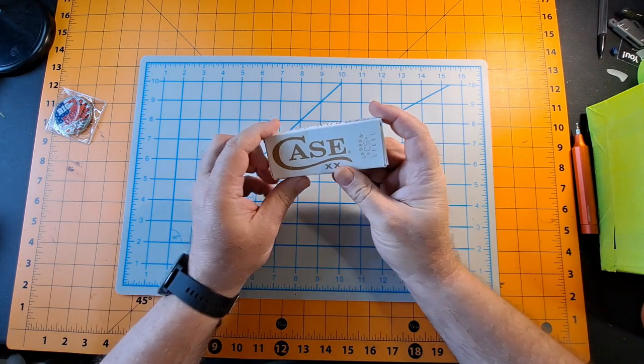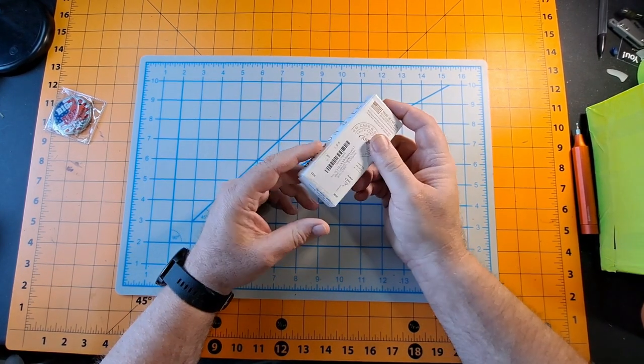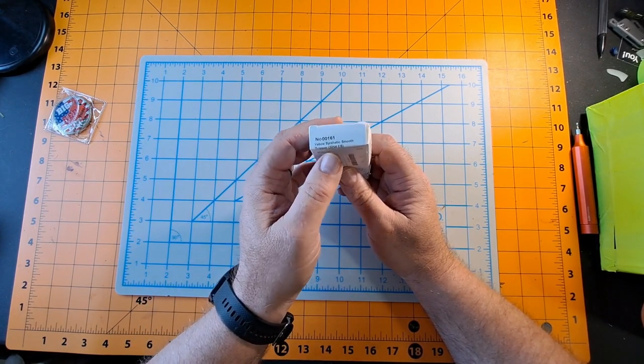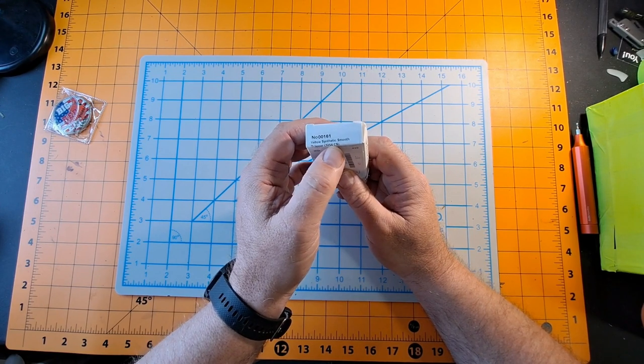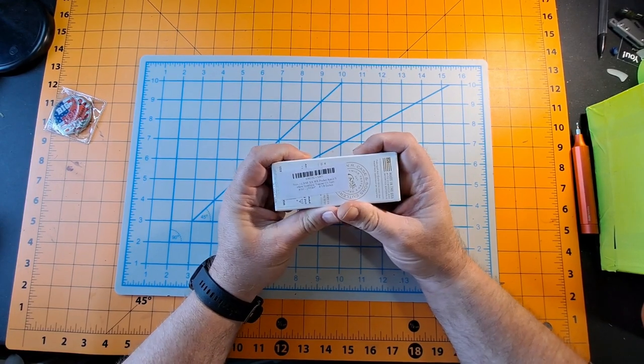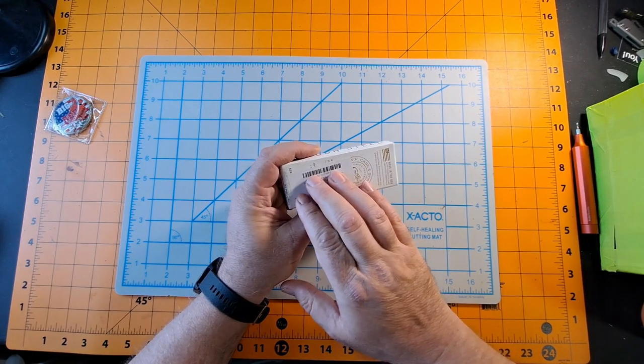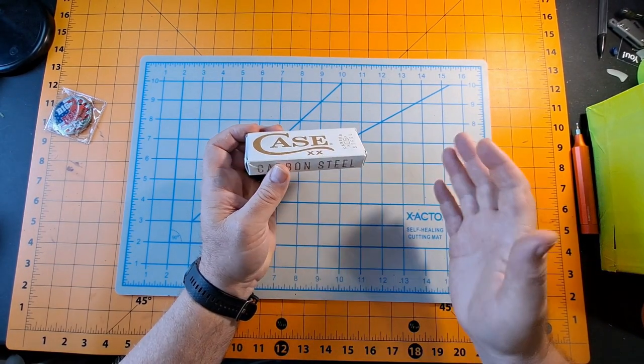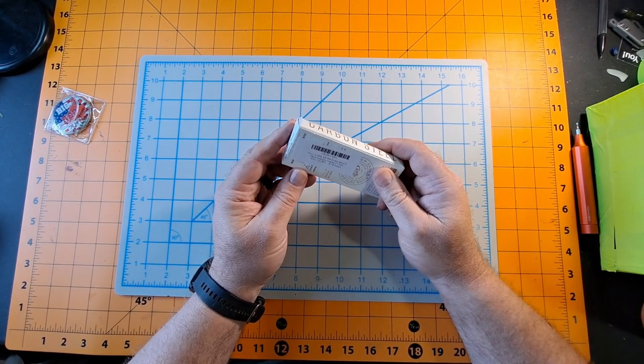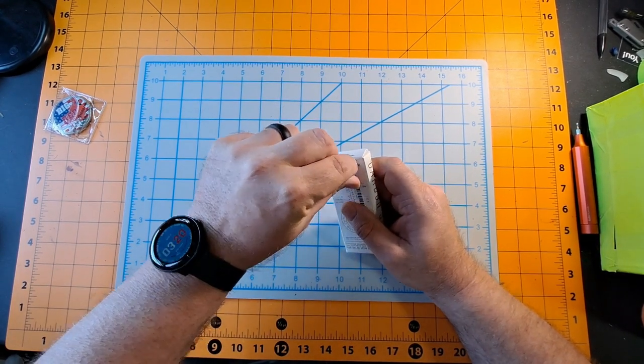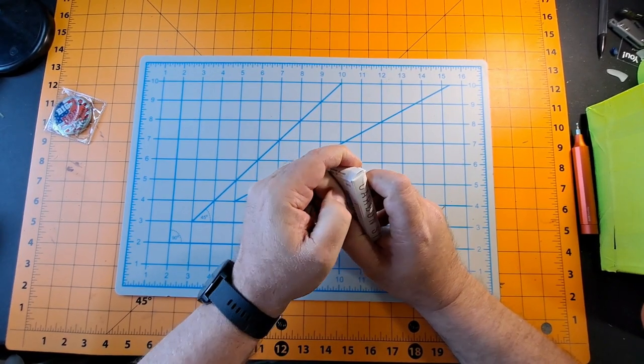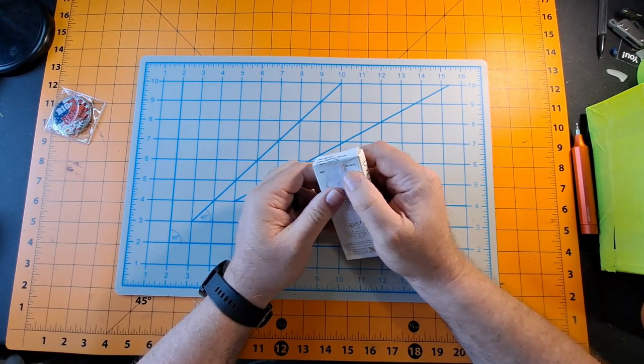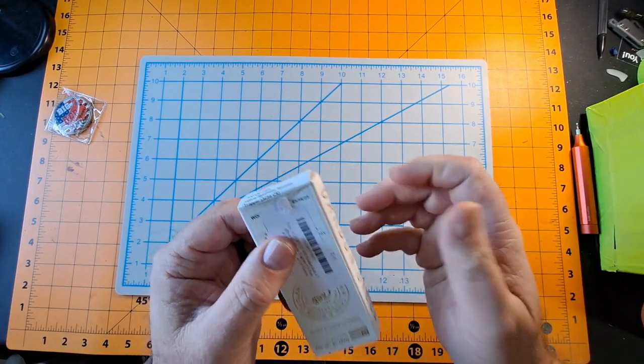This is a Case carbon steel, model 00616 I guess, yellow synthetic smooth trapper. Actually, the model is 3254CS for carbon steel. I actually wanted the chrome vanadium, the CV, not the carbon steel, which I guess is basically the same thing. So they covered up the date that it was made. It was made 01-1823, right there. So it's made this year.